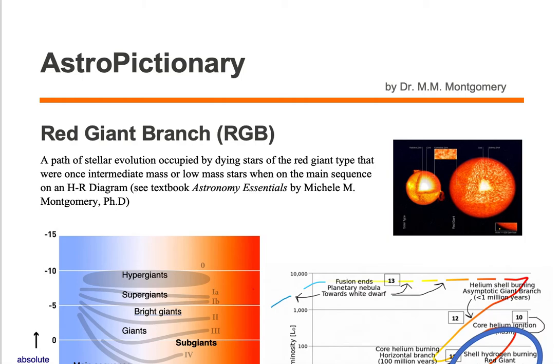The red giant branch, otherwise known as RGB for short, is a path of stellar evolution occupied by dying stars of the red giant type that were once intermediate mass or low mass stars when on the main sequence of an HR diagram.